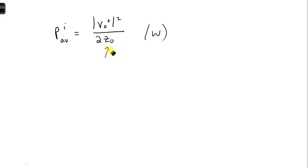We know Z naught, which is given. But we don't know V naught plus, so we need to find that.